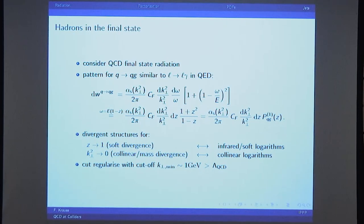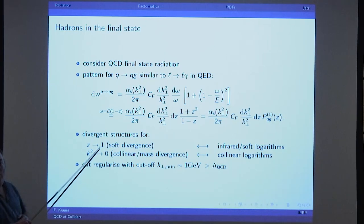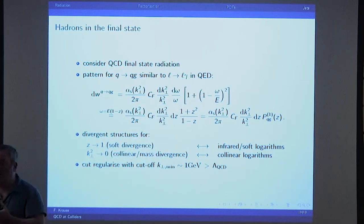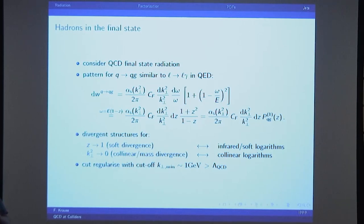Now, one of the things we already said yesterday — we have a double divergence structure in that. Our gluon can become very soft, or in other words the quark basically keeps its energy, and that's this 1/ω or 1/(1-z) type of divergence structure. The other divergence happens when the transverse momentum goes to zero. So you can have a lot of energy, but if it's completely collinear, then you still have a divergence structure.